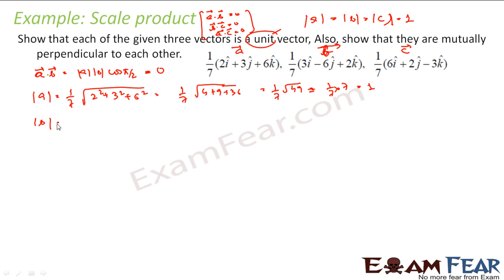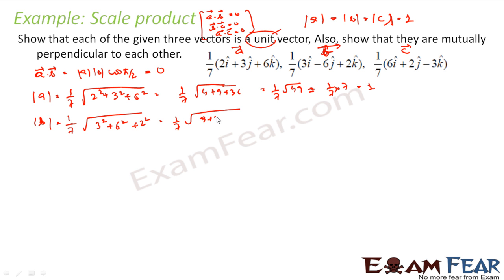Similarly, for vector B: magnitude of B is 1 by 7 times root of 3 squared plus 6 squared plus 2 squared, that is 1 by 7 times root of 9 plus 36 plus 4, which is 1 by 7 times root 49, that is 1 by 7 into 7 equals 1.